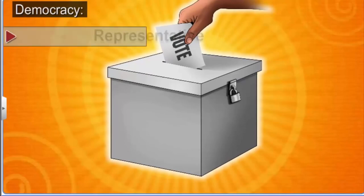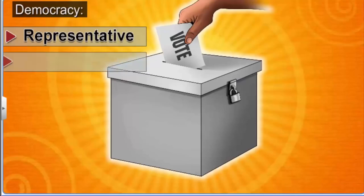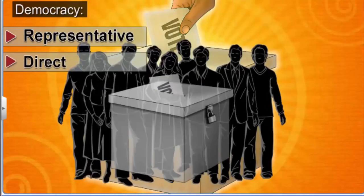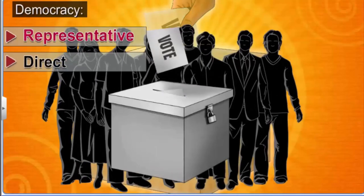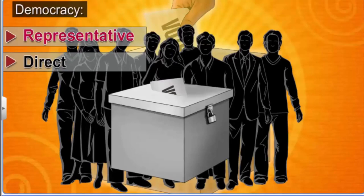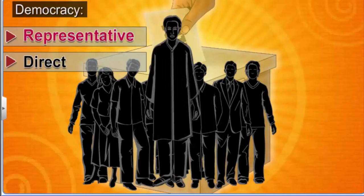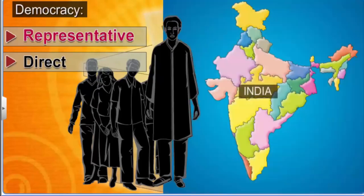Democracy can be of several types. However, the two main types of democracies are representative democracy and direct democracy. In representative democracy, the people elect individuals to represent them, and these representatives are given the authority to rule the country. India is a representative democracy.